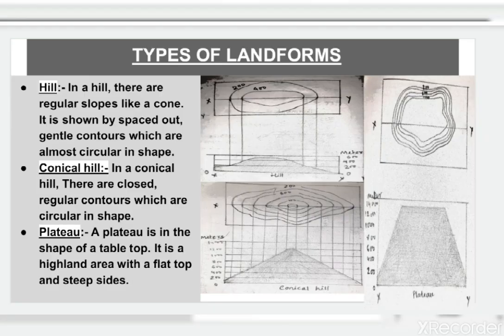Different types of landforms are also represented through contour patterns. In a topographical map, you will not see the landform directly, but you will see the contour patterns. These contour patterns represent different types of landforms on a map.